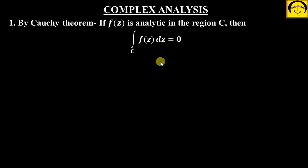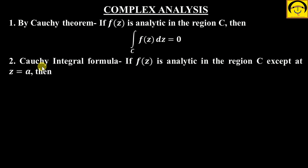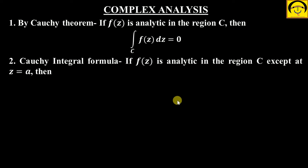What is the second theorem — or second formula, you can say — that is the Cauchy integral formula. It says that if f(z) is analytic in the region C, but except at z equal to a, meaning in the region C you have a point where it is not differentiable or not analytic, and everywhere except z equal to a it is analytic — everywhere differentiable except z equal to a — then if we take the whole integral along that region...